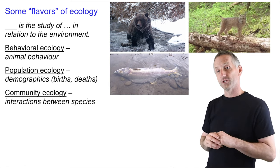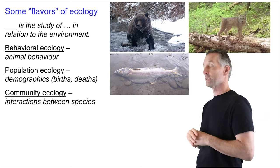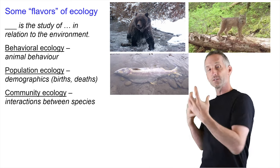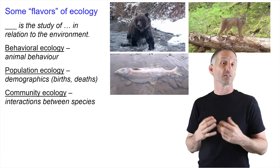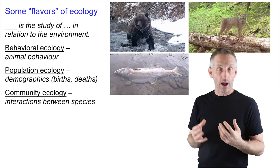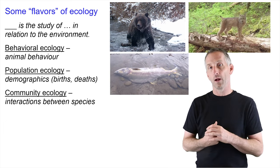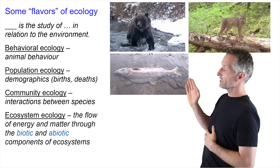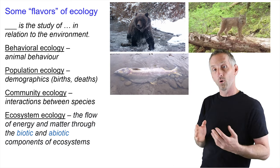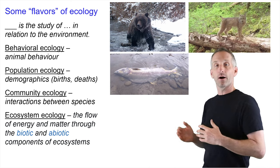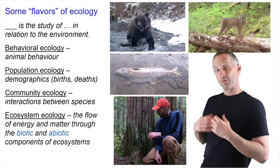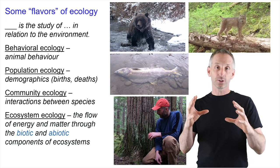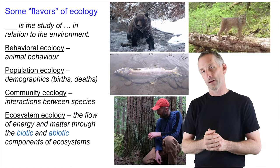Another form of ecology is community ecology — the study of interactions between species in relation to the environment. I'll take these species and weave them into a network of interactions discussed in the context of a food web, and talk about how those interactions can impact that entire food web. Finally, we'll talk about ecosystem ecology, the study of the flow of energy and matter through both the biotic and abiotic components of the ecosystem, and I'll discuss nitrogen limitation introduced in the introductory video.